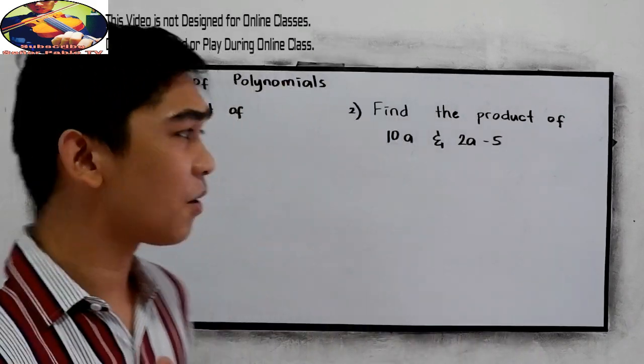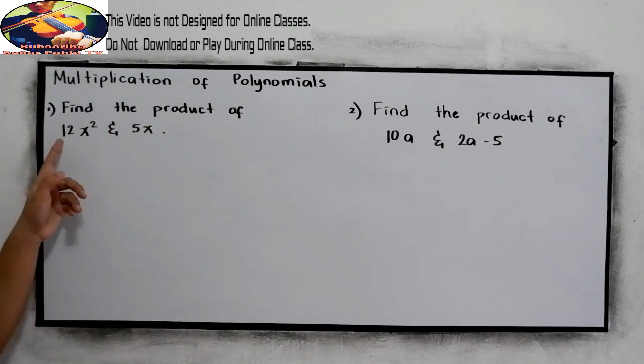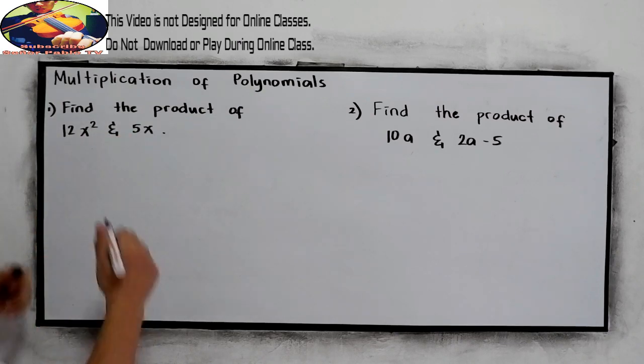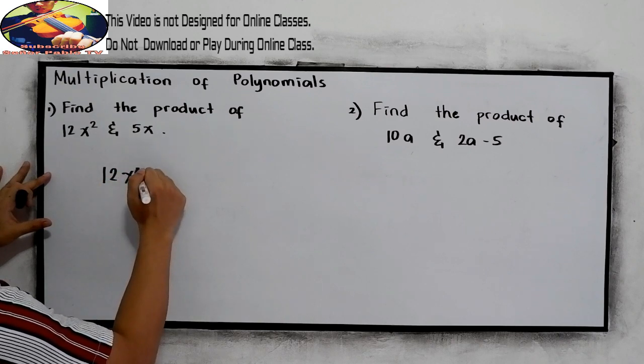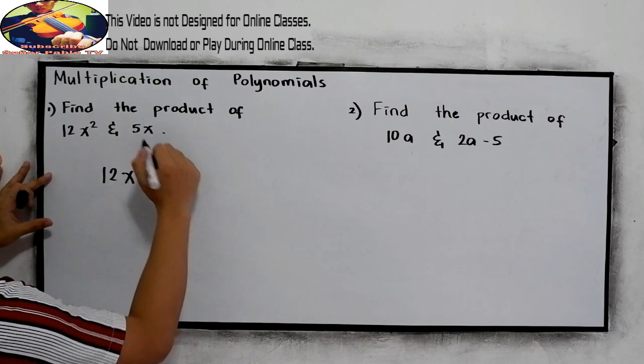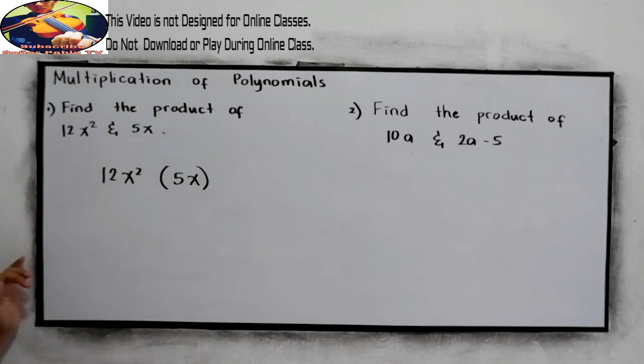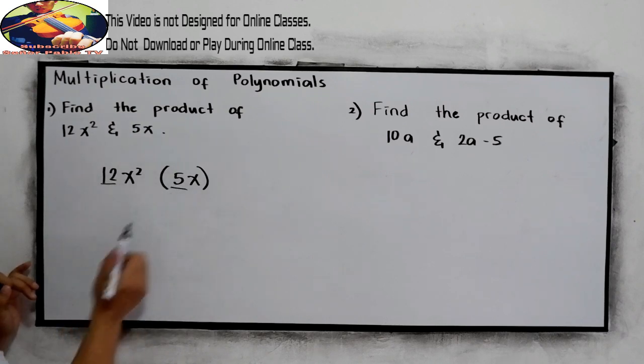So let's say we have problem number one. Find the product of 12x squared and 5x. So we need to multiply 12x squared times 5x. To simplify: